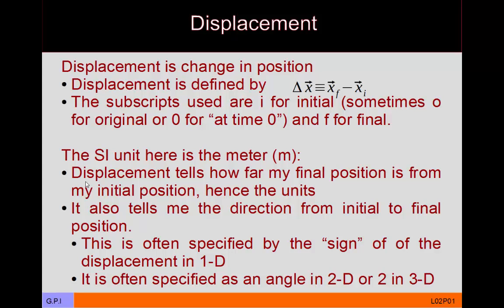This change in position is what's called displacement. Position we often represent with an X with a little arrow over the top — the arrow just means it's a vector. If there's no arrow over the top, it usually means we're dealing with a scalar. Displacement is defined by a change in position, so it's your final vector position minus your initial vector position.